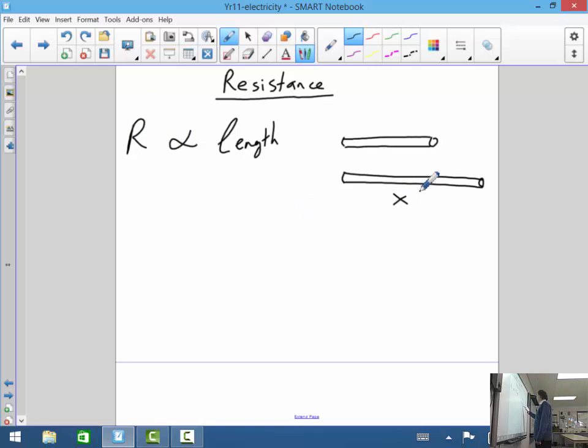So if you did have one that was twice as long as the other one, so that's one metre and this is actually two metres, so it was twice as long, then you should get twice the resistance from that because they're proportional to each other.